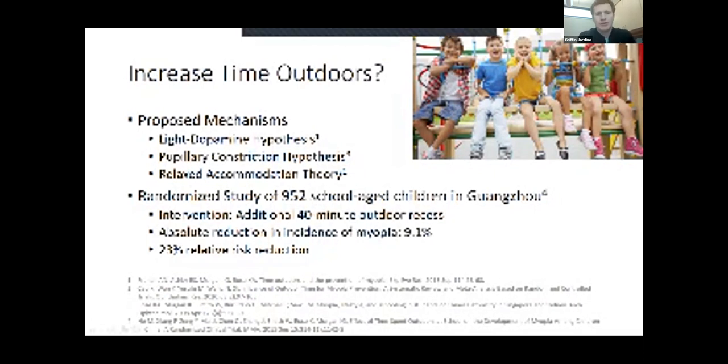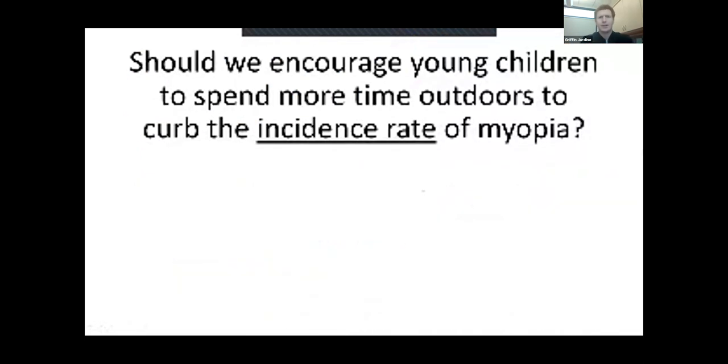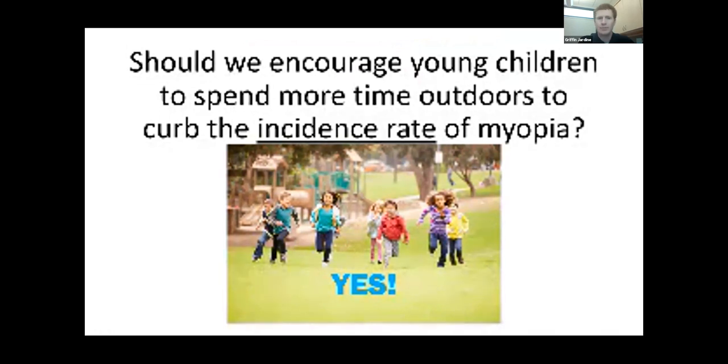There was a randomized control trial in Guangzhou, China, of about 1,000 kids who were given an additional 40-minute outdoor recess at the end of school. That extra time outdoors reduced the incidence of myopia by about 9%, which ended up being about a quarter in terms of relative risk reduction. My first question is, do we encourage young children to spend more time outdoors to curb the incidence rate of myopia? With all the data out there, this seems to be a pretty strong yes.